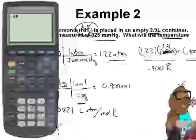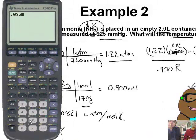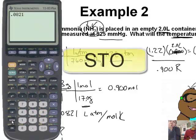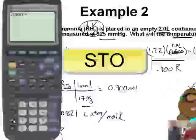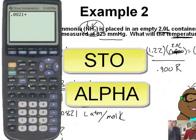Let me show you something on your calculator. I'm going to take 0.0821 and push the store button, then the alpha button.